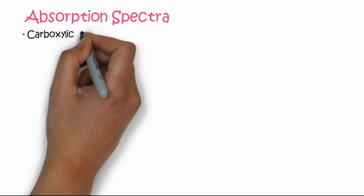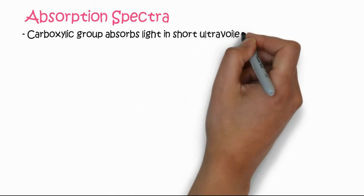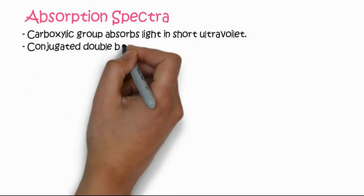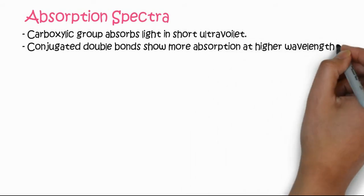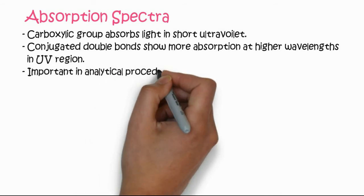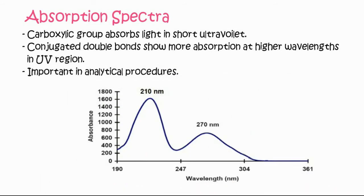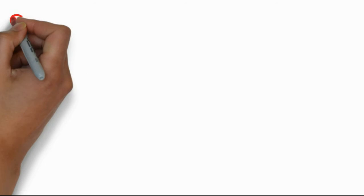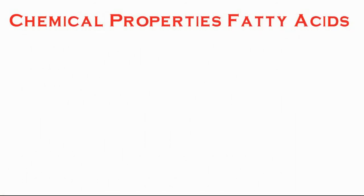The next property is absorption spectra. The carboxylic acid group absorbs light in the short ultraviolet range. Conjugated double bonds show more absorption at higher wavelengths in the UV region. This absorption spectra is important in analytical procedures, especially for analytical measurement. At 210 nanometers this represents the normal chain.